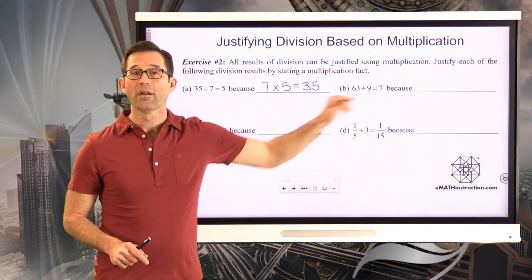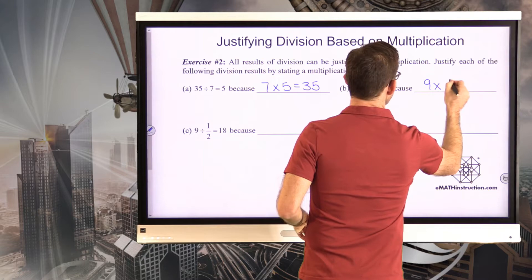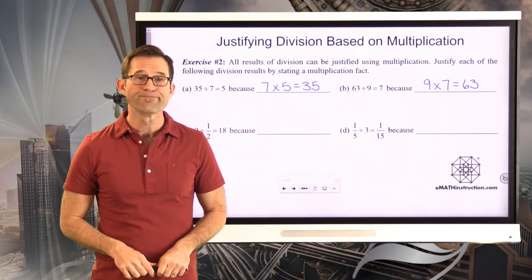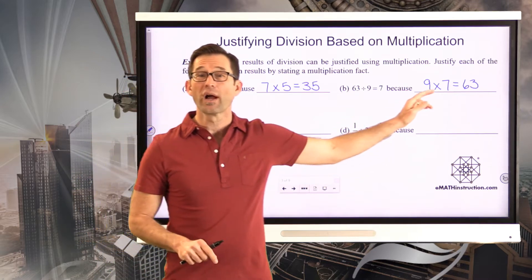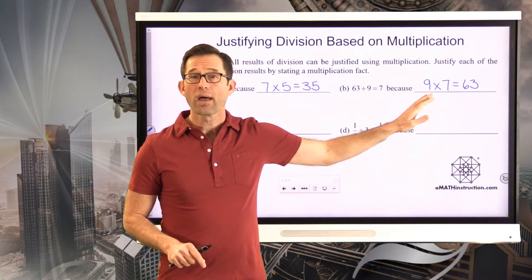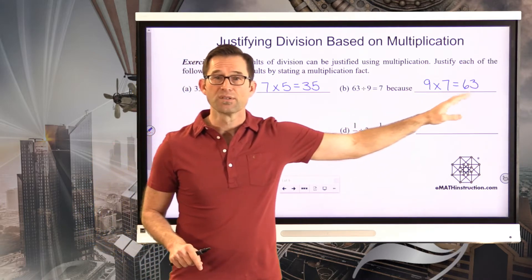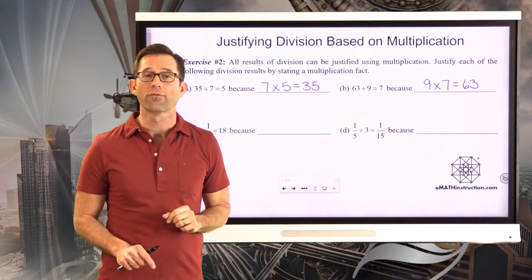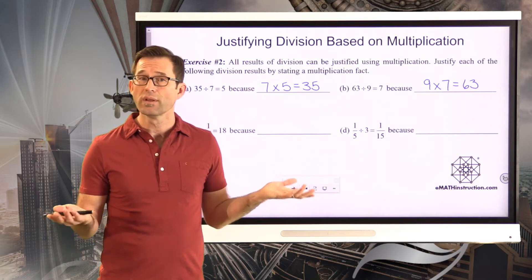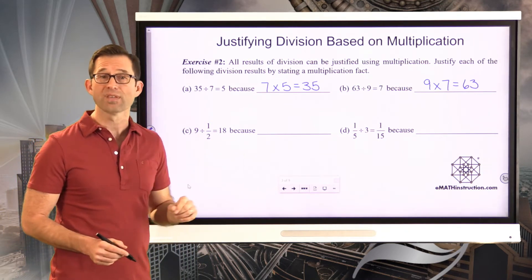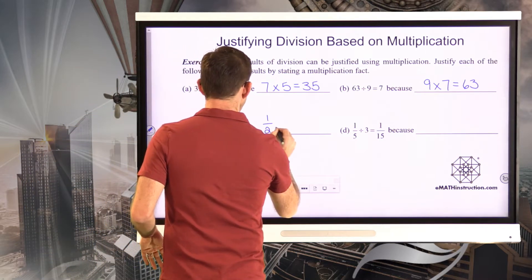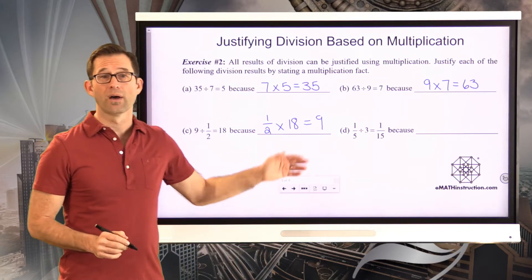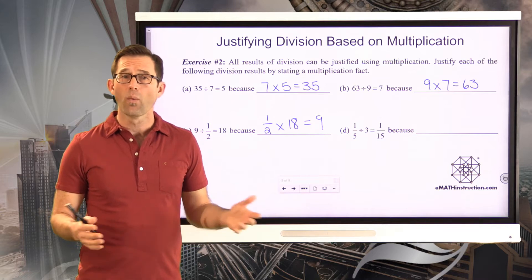Letter B: 63 divided by 9 equals 7 simply because 9 times 7 equals 63. If you wrote 7 times 9 equals 63, that's completely correct too, because multiplication is commutative. For the fraction examples: 9 divided by one-half is 18 because one-half times 18 equals 9 — and definitely one-half times 18 is 9 because 18 divided by 2 is 9. Also, one-fifth divided by 3 is one-fifteenth because 3 times one-fifteenth equals three-fifteenths, which reduces to one-fifth.